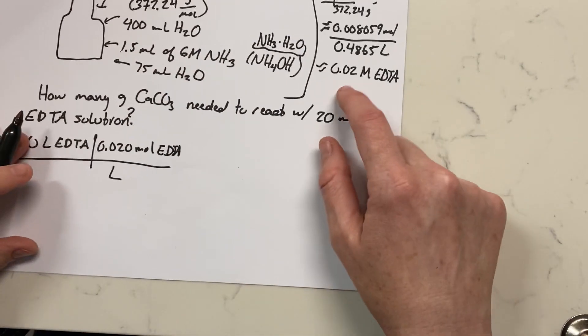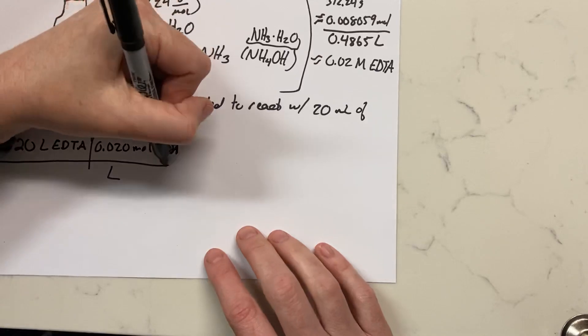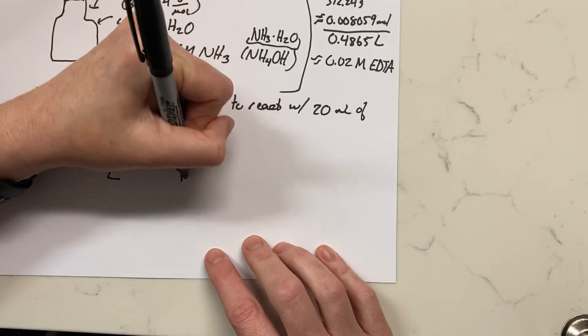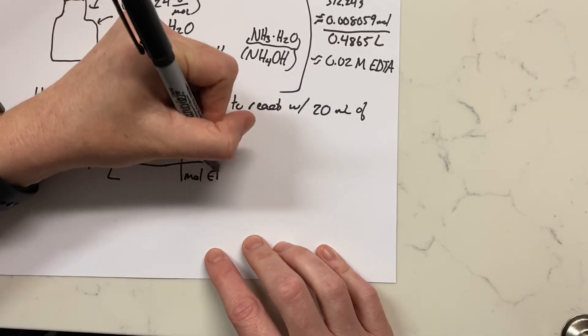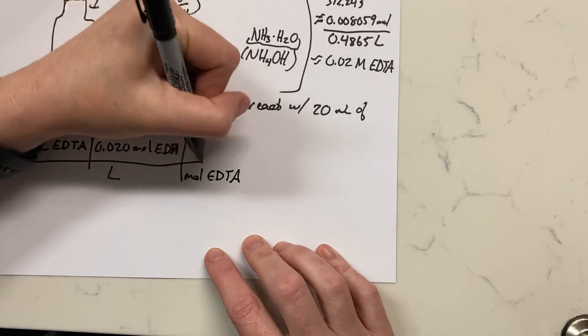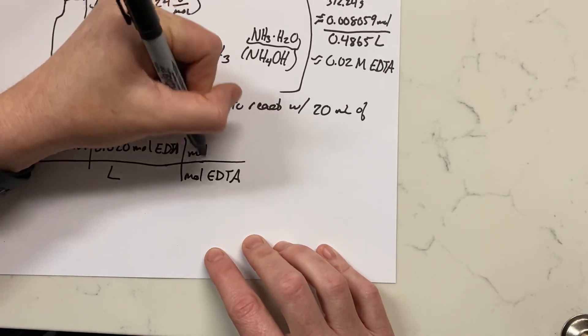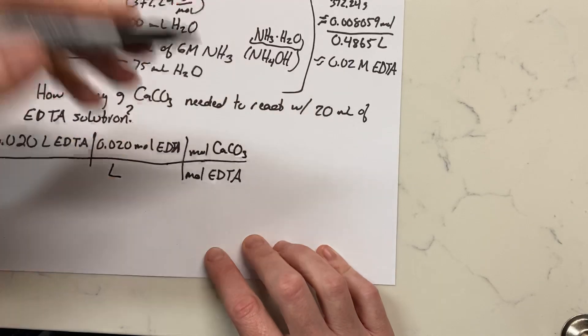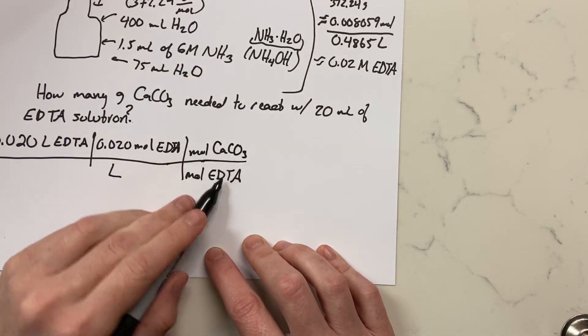So we also know that one mole of EDTA in a titration will bind with one mole of the calcium carbonate, because each calcium carbonate has only one calcium, so it's a one-to-one ratio.